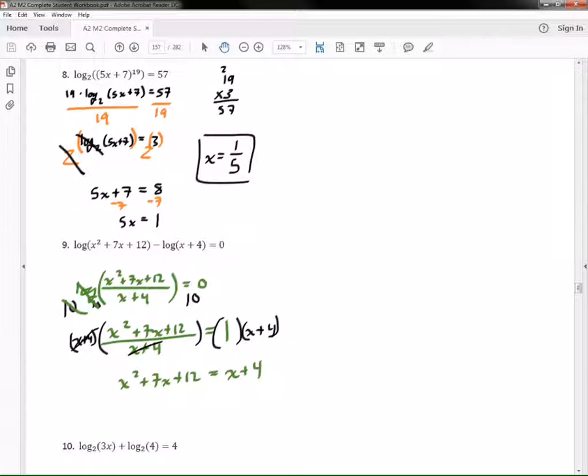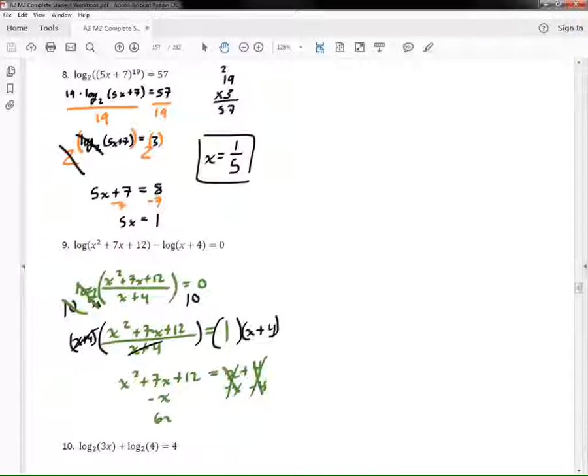But I'm not going to divide, I'm going to subtract. So if I subtract x right here it would go away, and if I subtract 4 right here it would go away. If I subtract x right here then I would get 6x. Let's put that x squared right in front of him. And if I subtract 4 right here I would get 8, plus 8.